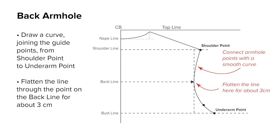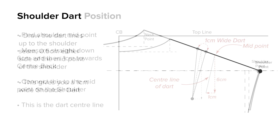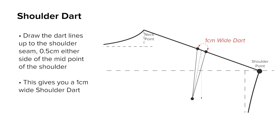The shoulder dart position. Find the middle of the shoulder and draw a vertical guide line down 6 centimeters, then measure 1 centimeter to the left. Use this as the end point of the shoulder dart. Draw a line back up to the shoulder midpoint — this is the dart center line. Draw the dart lines up to the shoulder seam 0.5 centimeters either side of the midpoint, giving you a 1 centimeter wide shoulder dart.